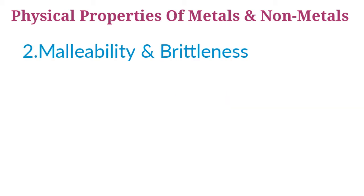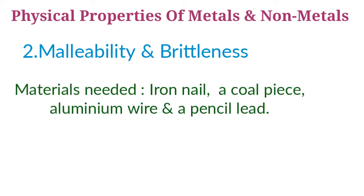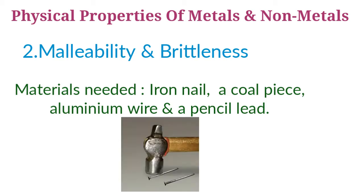Next property: malleability and brittleness. To understand this, we will do an activity. Take a small iron nail, a coal piece, a piece of thick aluminium wire, and a pencil lead. Beat the iron nail with a hammer — try to hit it hard. Repeat the activity with the aluminium wire, coal piece, and pencil lead. What do you observe?